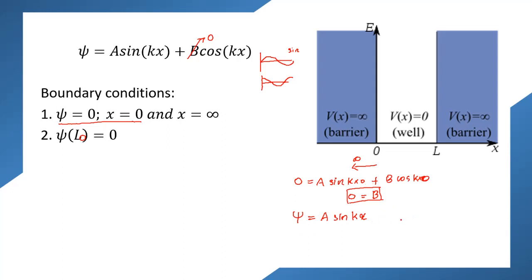The second boundary condition says ψ = 0 when x = L. Substituting: 0 = A sin(kL). Now, A cannot be equal to zero because that would make the wave function zero everywhere, which we do not want. So what must go to zero is the sine term. We need to find at what conditions sine equals zero.